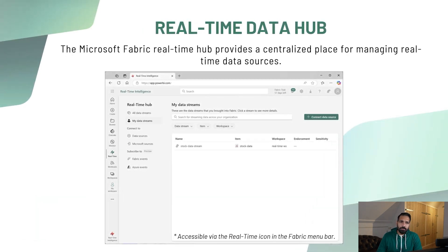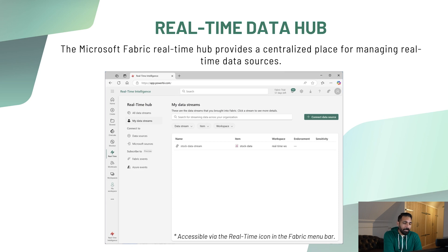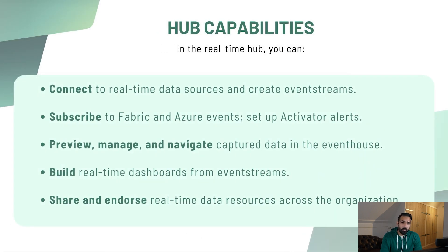The Microsoft Fabric real-time data hub provides a centralized place for managing all your real-time data sources. We'll cover this more in the demo. Data hub capabilities include: connecting to real-time data sources and creating event streams, subscribing to Microsoft and Azure events, setting up Activator alerts, previewing and managing data in the Event House, building real-time dashboards using Power BI from event streams, and sharing and endorsing real-time data sources across the organization.